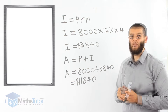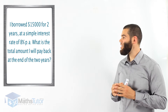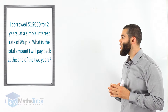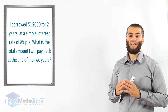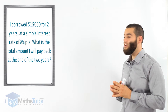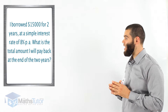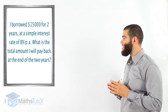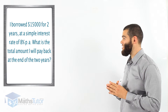Let's do another example. I borrowed $15,000 for two years at a simple interest rate of 8% per annum. What is the total amount I will pay back at the end of the two years? They're specifically asking for the total amount paid back — that's the amount borrowed plus the simple interest. So $15,000 is our principal, two years is the number of periods, and 8% per annum is our rate.